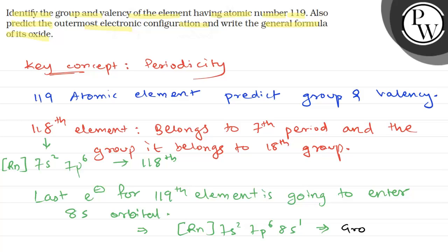Because the last electron is in s orbital, and that is, one electron is only there. If it would have been 2, then this is going to belong to group 2. But here, this electron is only in s orbital. This is going to belong to group 1, the alkali metal group.